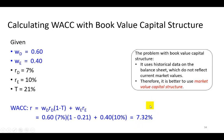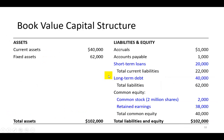The problem with this book value capital structure is that it uses historical data from the balance sheet, which does not reflect current market values. For example, this long-term debt might have been issued 10 years ago when the interest rate was 8%, and now interest rates might be 12% or as low as 3%. The value of that $40,000 of debt is going to be different today than it was when the company issued it.